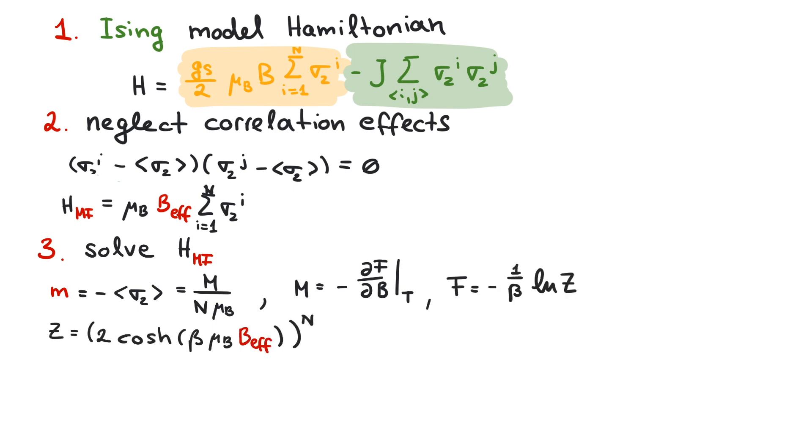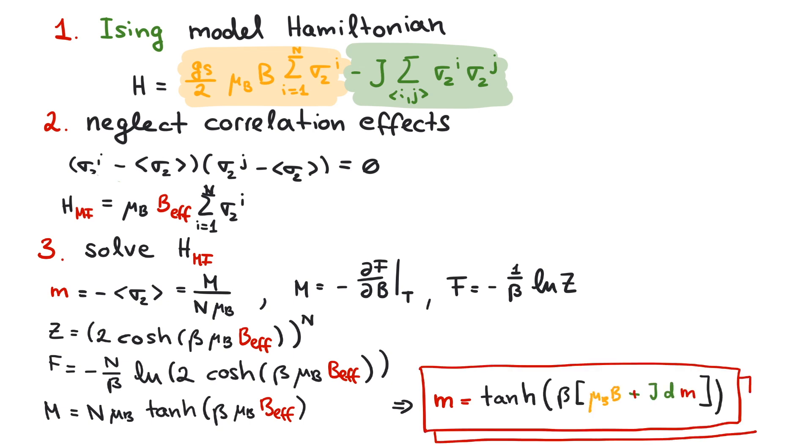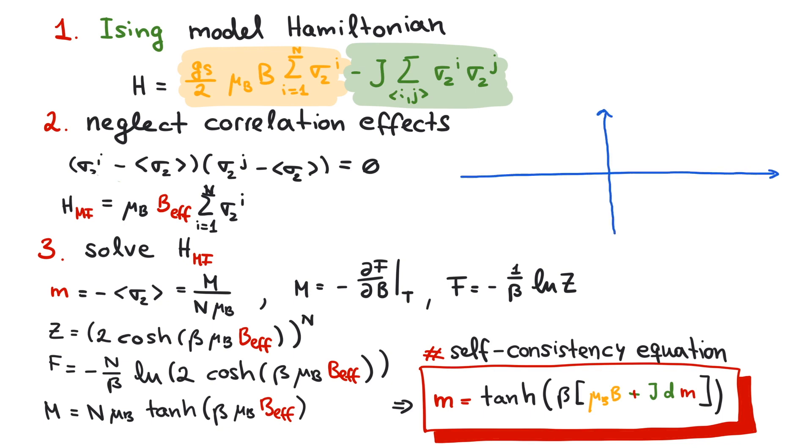Our final result is a transcendental equation. That means we cannot rearrange it to have M appearing only on one side of the equation. Instead, we have to solve it by plotting both sides of the equation. The left side is simply a line. The right side is the hyperbolic tangent, where the limits go to plus and minus 1. The solutions are where both plots overlap.